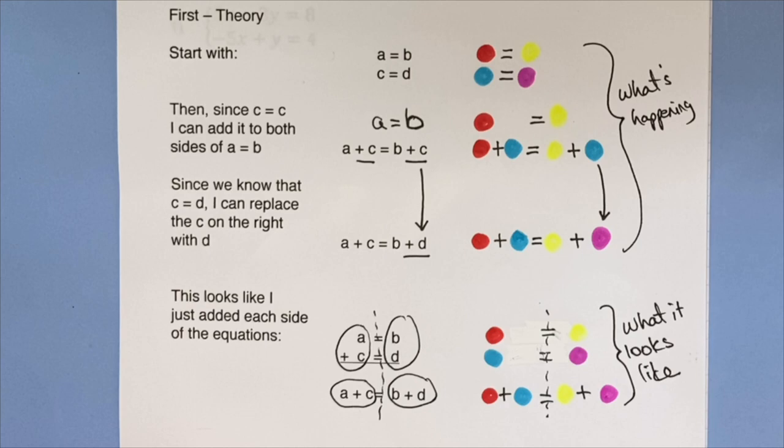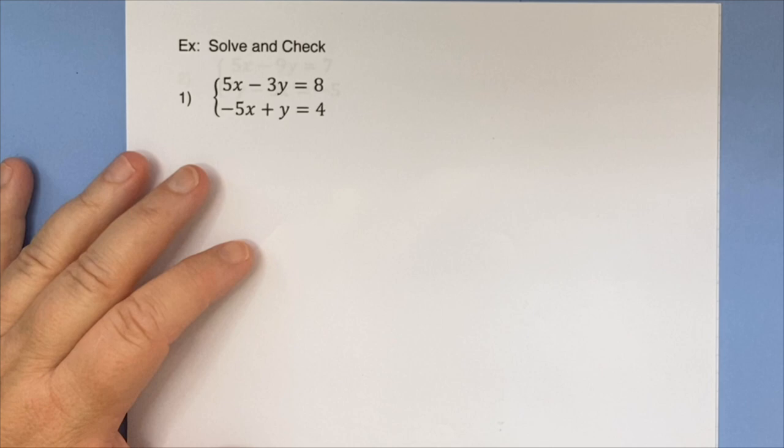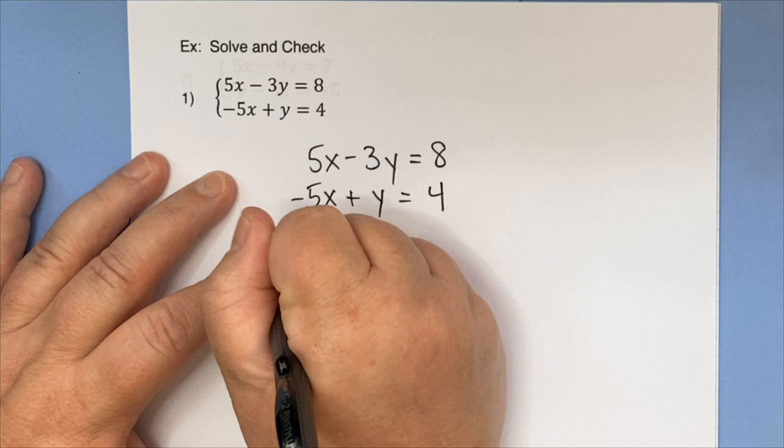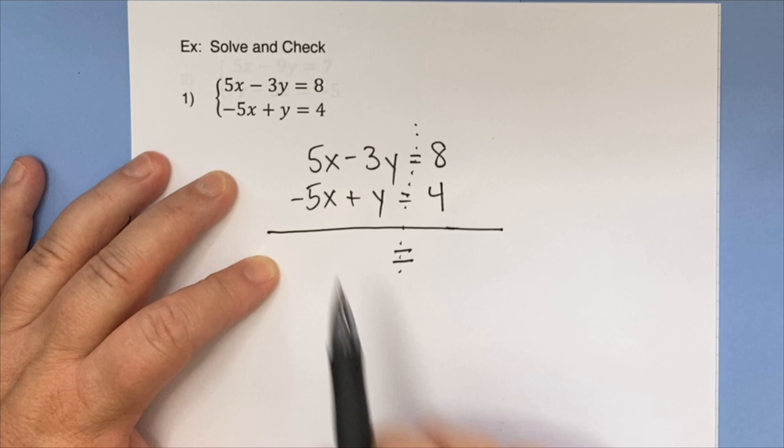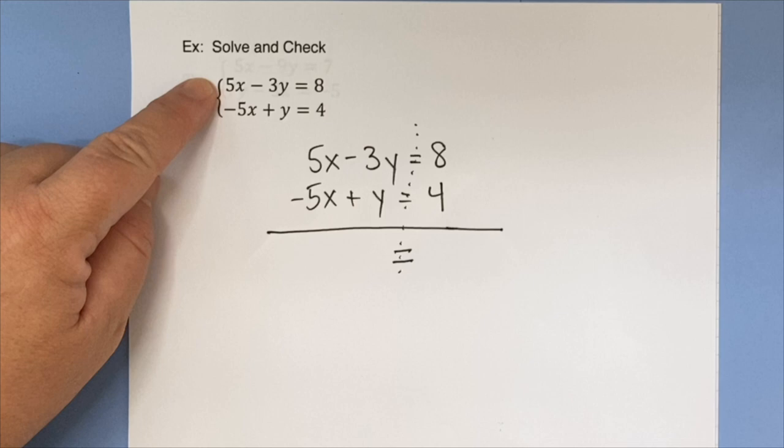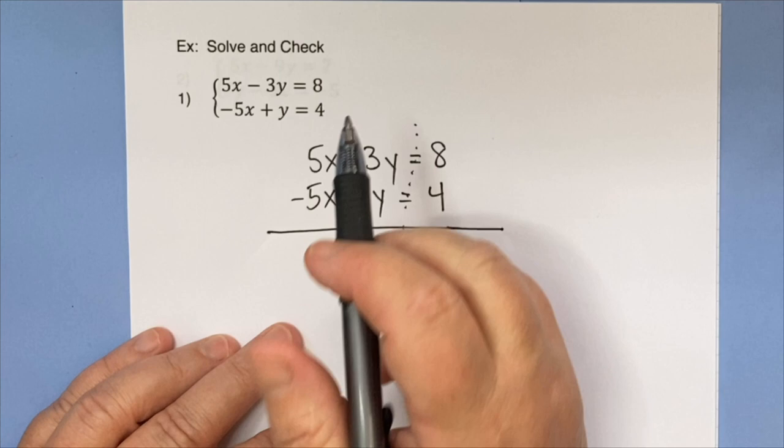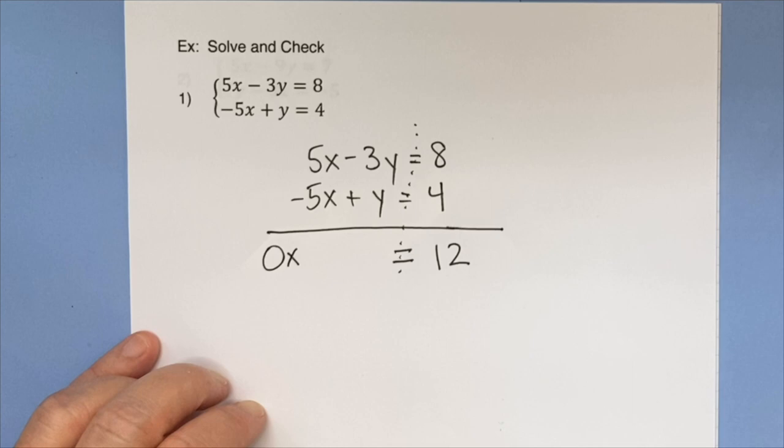Let's go into our first example. So we're going to solve and check. I'm going to show you what we're going to do. So I'm going to take the 5x minus 3y equals 8 and the negative 5x plus y equals 4 and draw a line underneath them. I'm also going to make sure that the equals are lined up. I'm going to add. I'm going to start on the right because it's easy. 8 plus 4 is 12. Now over on the left, 5x minus 5x means there are zero x's left.